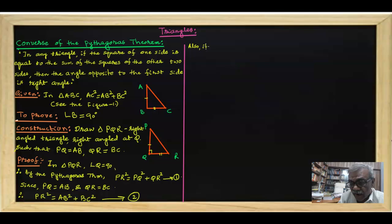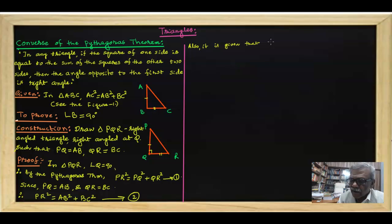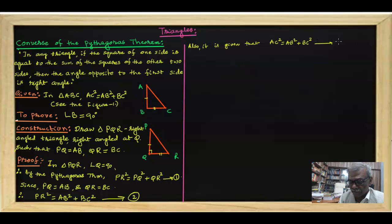It is given that AC squared equals AB squared plus BC squared — let me call this equation number three, as stated in the given condition of the theorem.